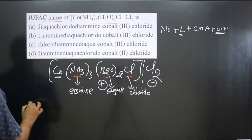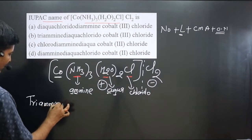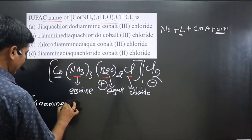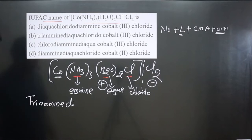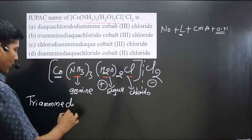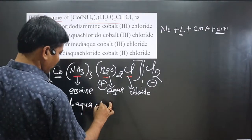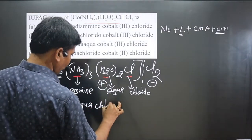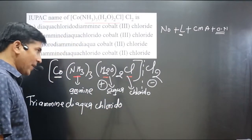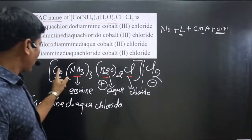There are three NH₃ ligands, so we write 'tri' giving 'triamine'. There are two H₂O molecules, so we write 'di' giving 'diaqua'. Then following alphabetical order we have 'chlorido' for the Cl ligand. So the ligand portion is: triamine diaqua chlorido.